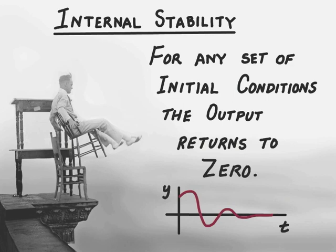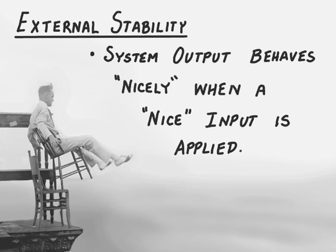To review, internal stability looks at whether the output returns to zero after the initial conditions are moved away from the equilibrium values. For external stability, we're looking at the stability of the system in response to an input. We can't expect the output to go back to its equilibrium value when it's being disturbed by the input, so we need a new idea about how to think about stability. For external stability, we're going to ask that the system output behave nicely when a nice input is applied.